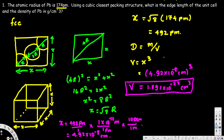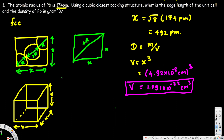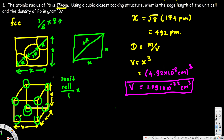Now to find density we need both mass and volume. We found the volume; now we need the mass. For a face-centered cubic structure, one unit cell has four atoms. In the middle of each face we have half an atom — half times six faces = 3. In each corner we have one-eighth of an atom — one-eighth times eight corners = 1. So 1 + 3 = 4 atoms per unit cell.